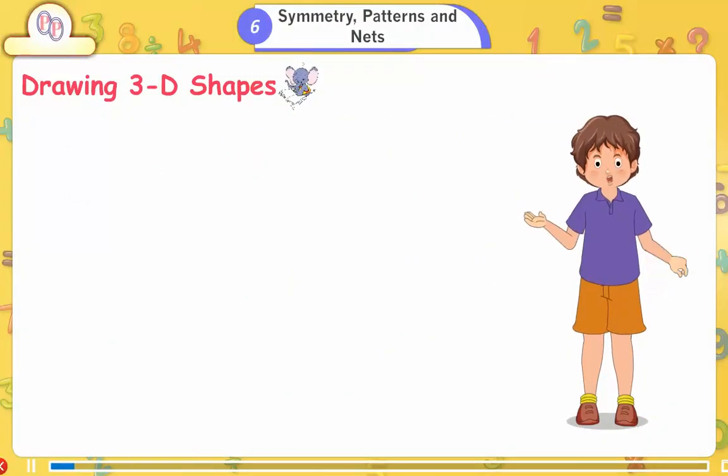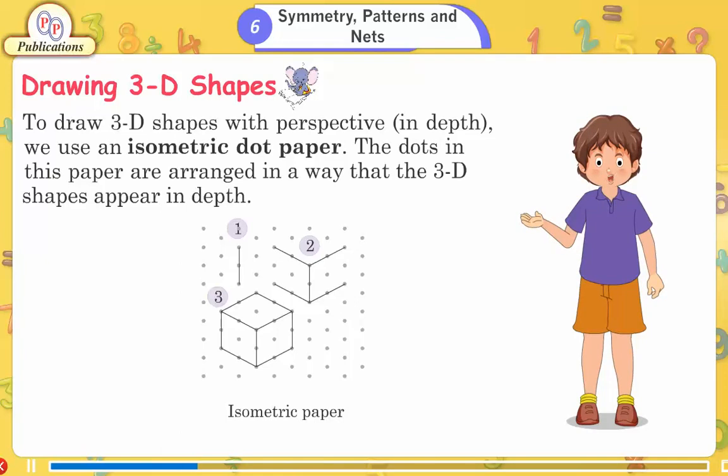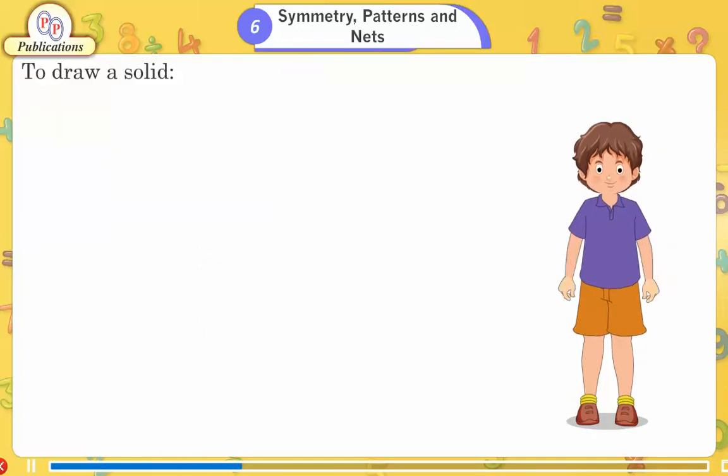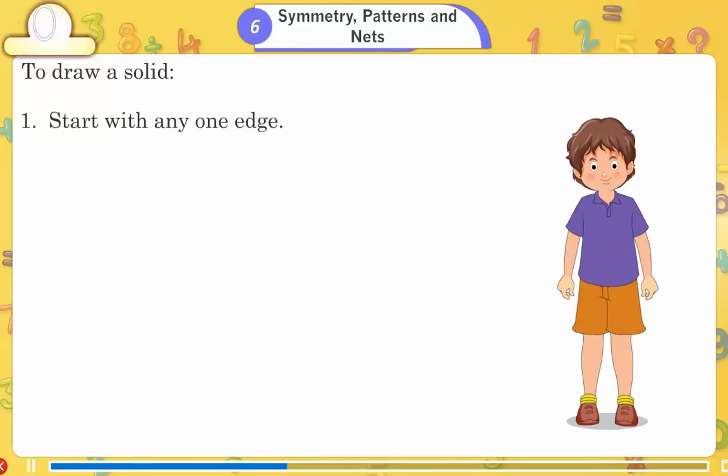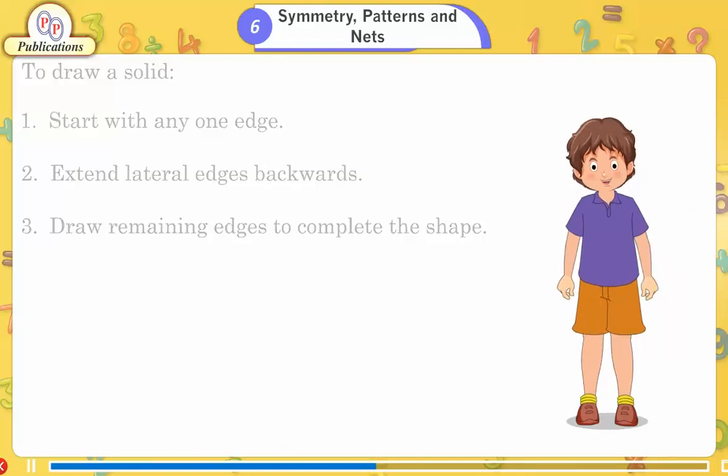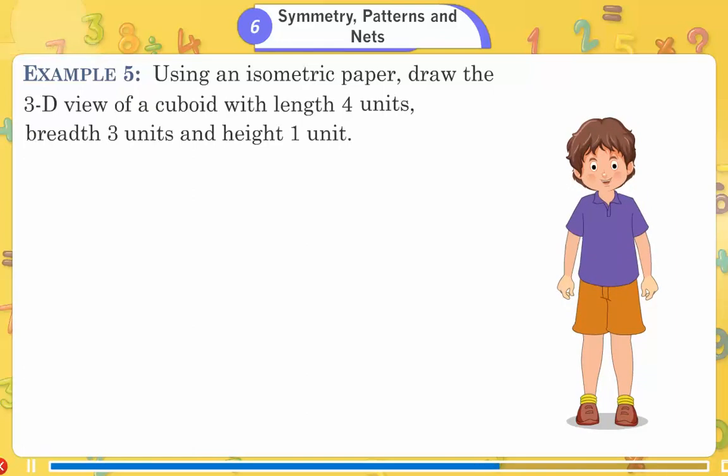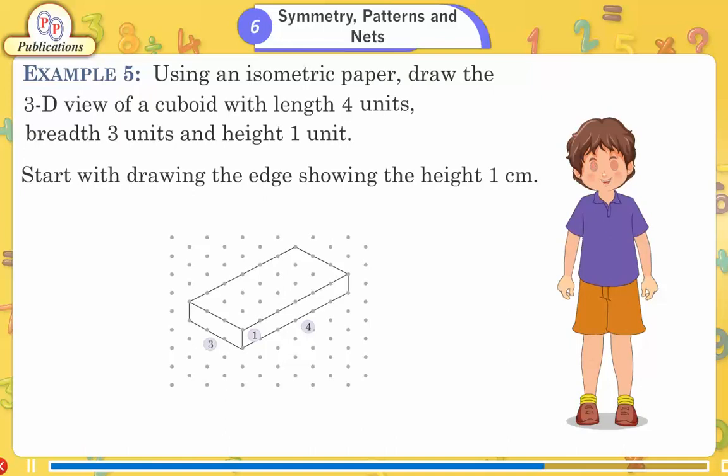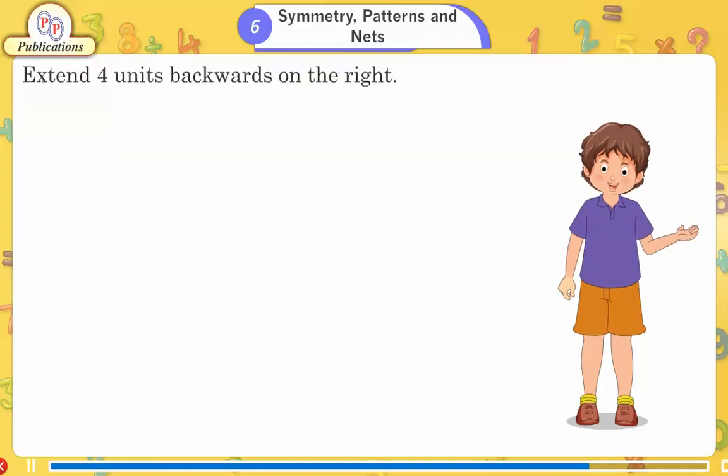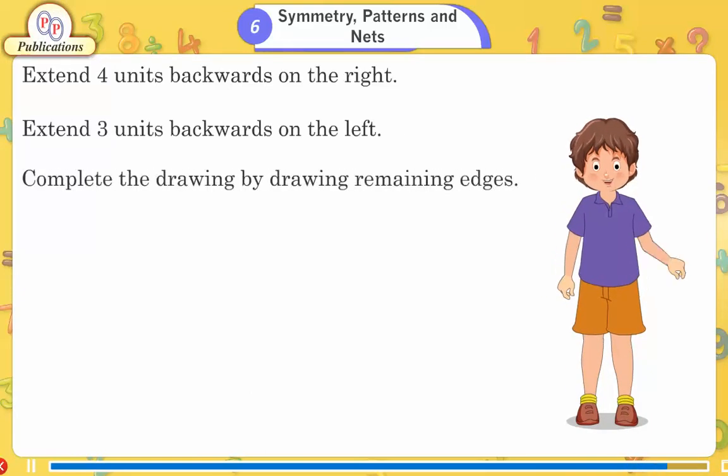Drawing 3D shapes. To draw 3D shapes with perspective in depth, we use an isometric dot paper. The dots in this paper are arranged in a way that the 3D shapes appear in depth. To draw a solid: 1. Start with any one edge. 2. Extend lateral edges backwards. 3. Draw remaining edges to complete the shape. Example 5: Using an isometric paper, draw the 3D view of a cuboid with length 4 units, breadth 3 units, and height 1 unit. Start with drawing the edge showing the height of 1 cm. Extend 4 units backwards on the right. Extend 3 units backwards on the left. Complete the drawing by drawing remaining edges.